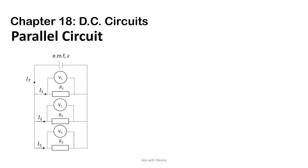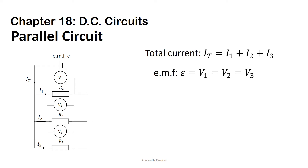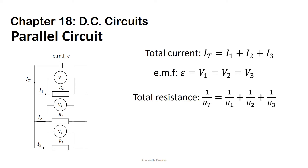This diagram shows a parallel circuit where three resistances R1, R2, and R3 are connected in parallel. The total current: I_T equals I1 plus I2 plus I3. The EMF: ε equals V1 equals V2 equals V3. The total resistance is given by the parallel resistance formula.